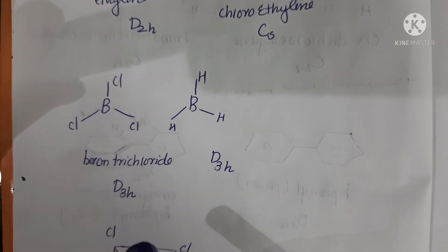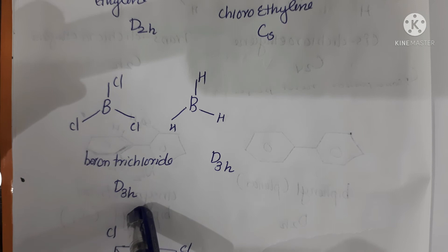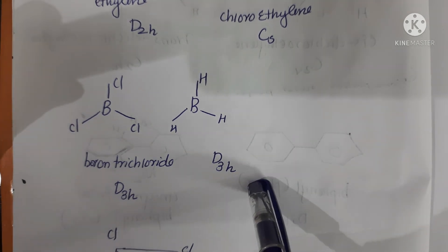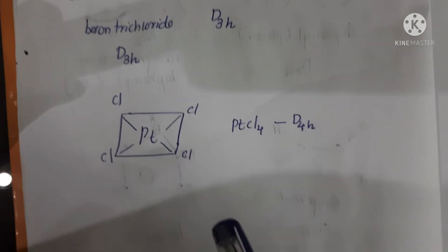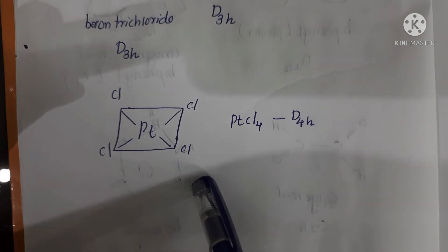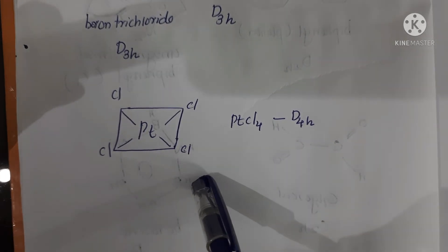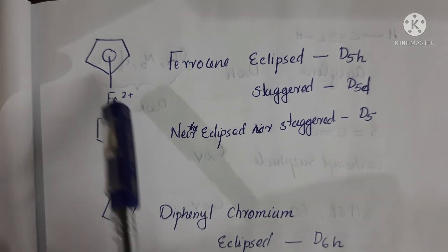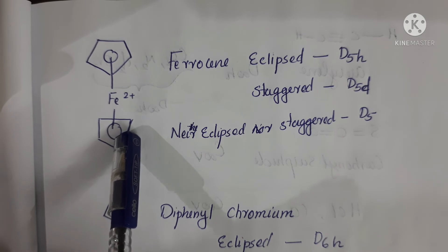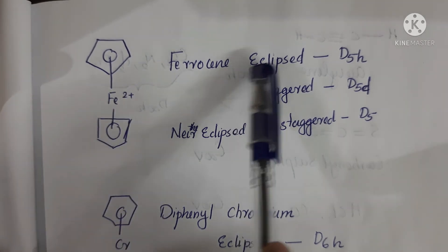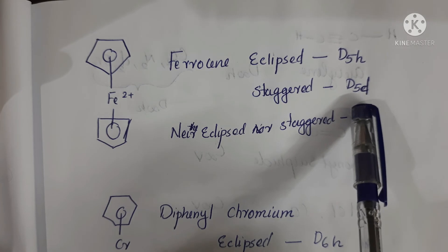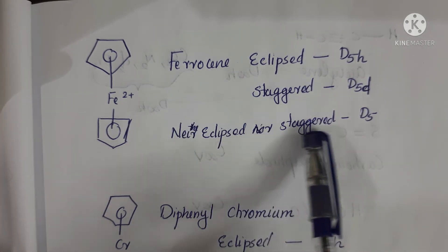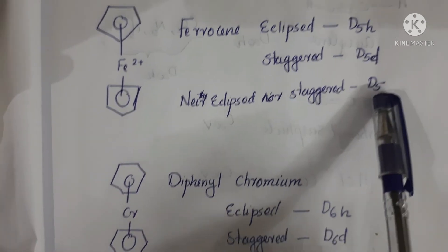Boron trichloride (BCl3) is D3H and BH3 is also D3H point group. PtCl4 is D4H point group. Ferrocene — the cyclopentadienyl rings and iron with 2+ oxidation state — in the eclipsed form is D5H, in the staggered form is D5D, and neither eclipsed nor staggered is D5.